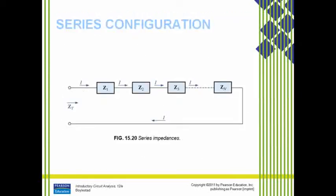Series configuration: Z1, Z2, Z3 through Zn are connected in series, and the same current flows through each element. The total impedance ZT equals Z1 plus Z2 plus Z3 and so on up to Zn.